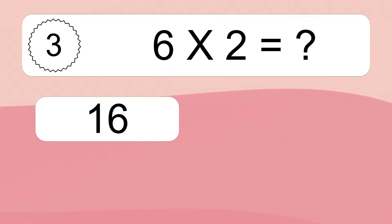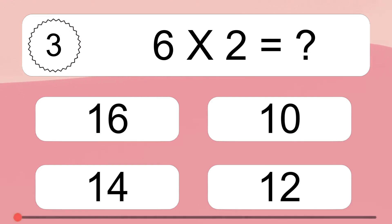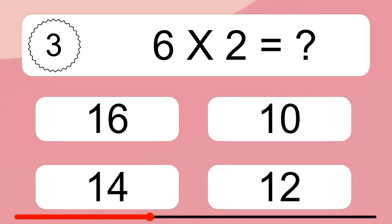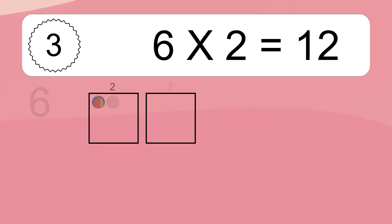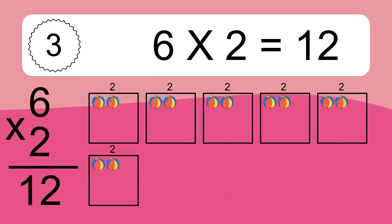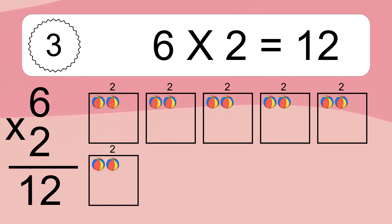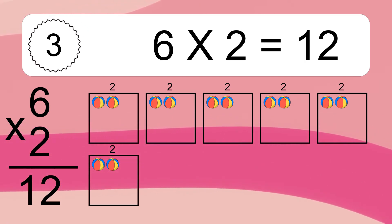6 times 2 equals what? We have 6 boxes, and each box has 2 colorful balls inside. If you count all the balls in all the boxes together, you will have 6 times 2 balls. This equals 12 balls.